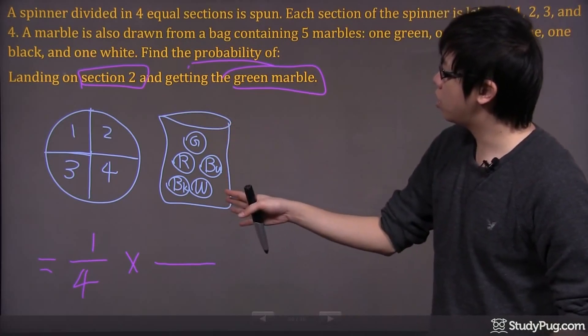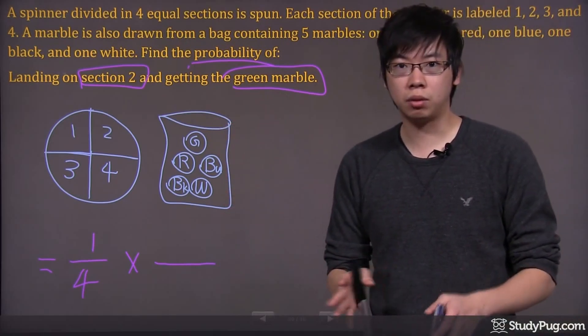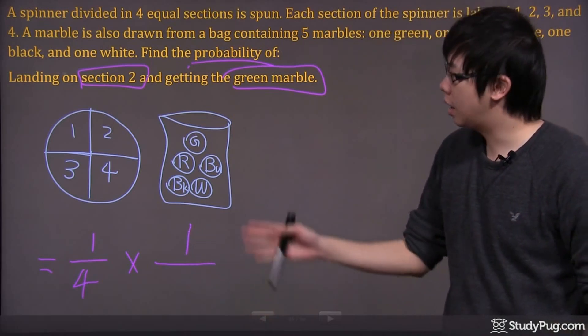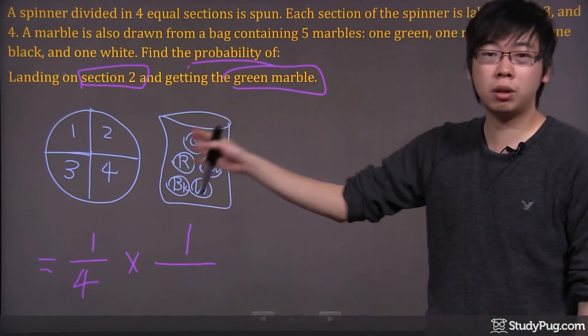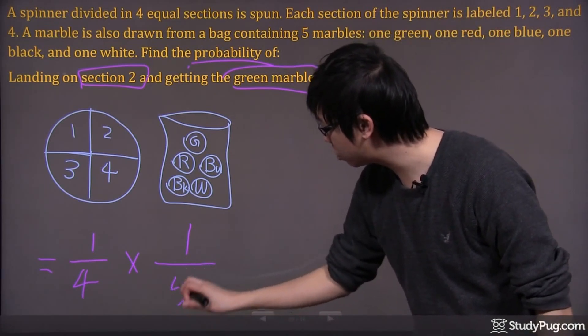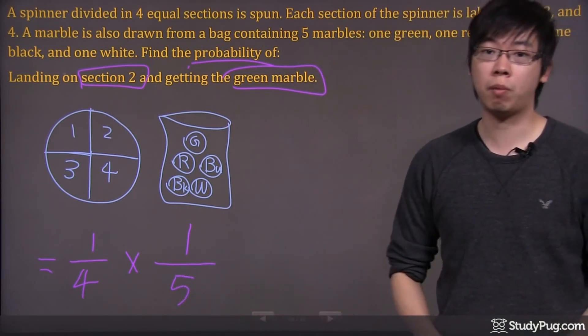The second one wants you to get the green marble. How many greens do you have? You got one. That's the one you're looking for. How many possibilities do you have in this bag? You have five marbles, so that's your total sample space. You put it at the bottom.